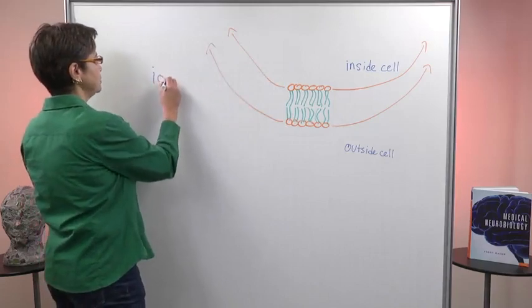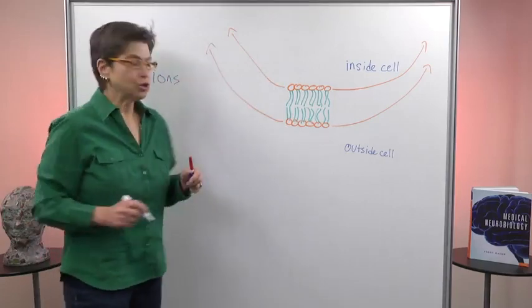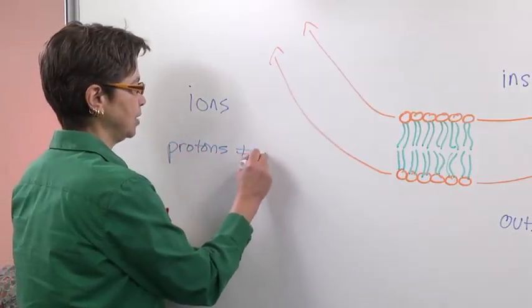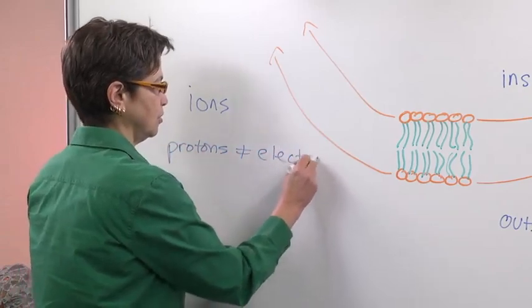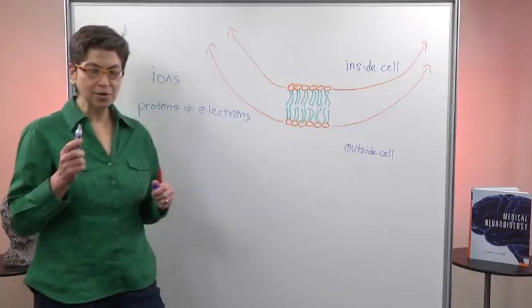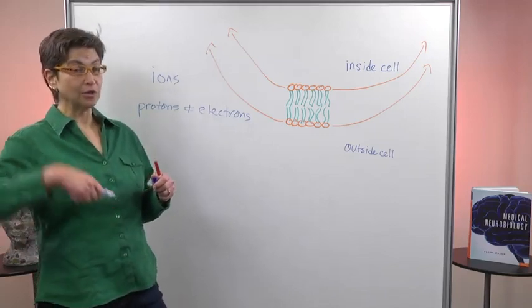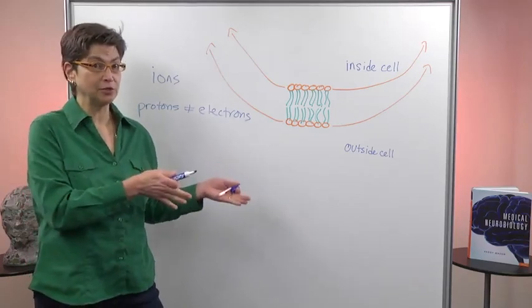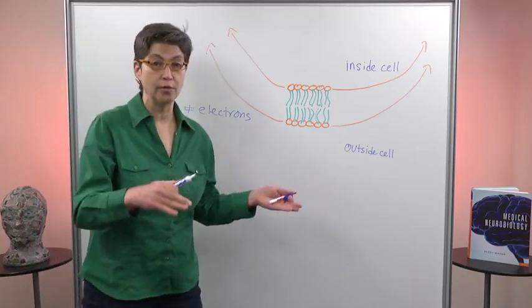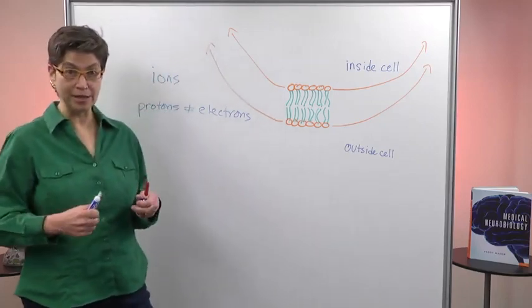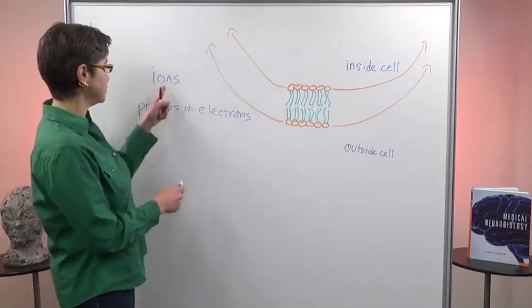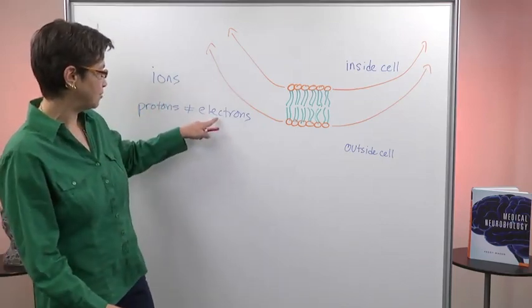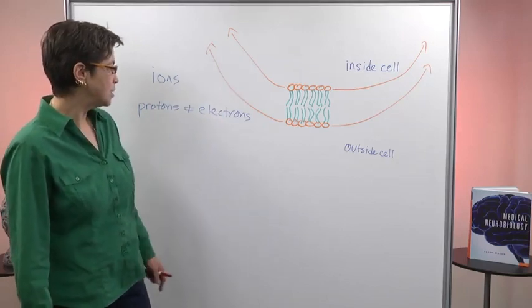So ions are simply molecules where the number of protons is not equal to the number of electrons. Another way to think about this is these molecules have either lost an electron or two—lost that electron and now they're positively charged—or they've gained one, one has come onto this molecule, and then they're negatively charged. So ions are either positively charged or negatively charged just because they've either gained or lost electrons.